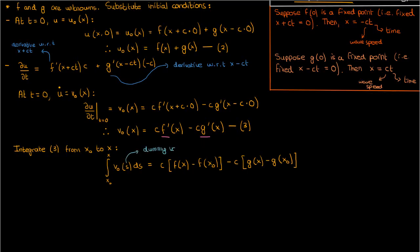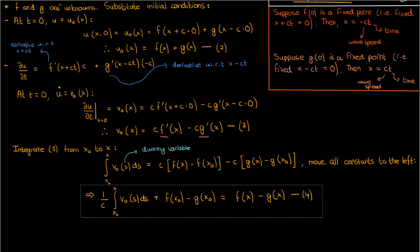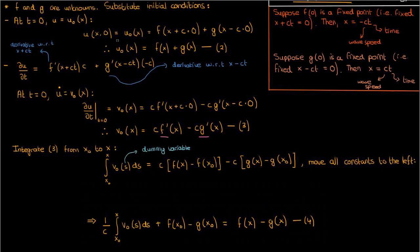Note that s here is just a dummy integration variable. Let's move all the constants to the left-hand side and leave only f of x and g of x on the right. I'm going to call this guy equation 4. Now equations 2 and 4 are both in terms of the unknown functions f of x and g of x. So what I'm going to do is solve this system of equations, find f of x and g of x in terms of the functions given as our initial conditions, u0 and v0, and then I'm going to plug the f of x and g of x into our general solution in equation 1 to finally get the answer to this wave equation problem.